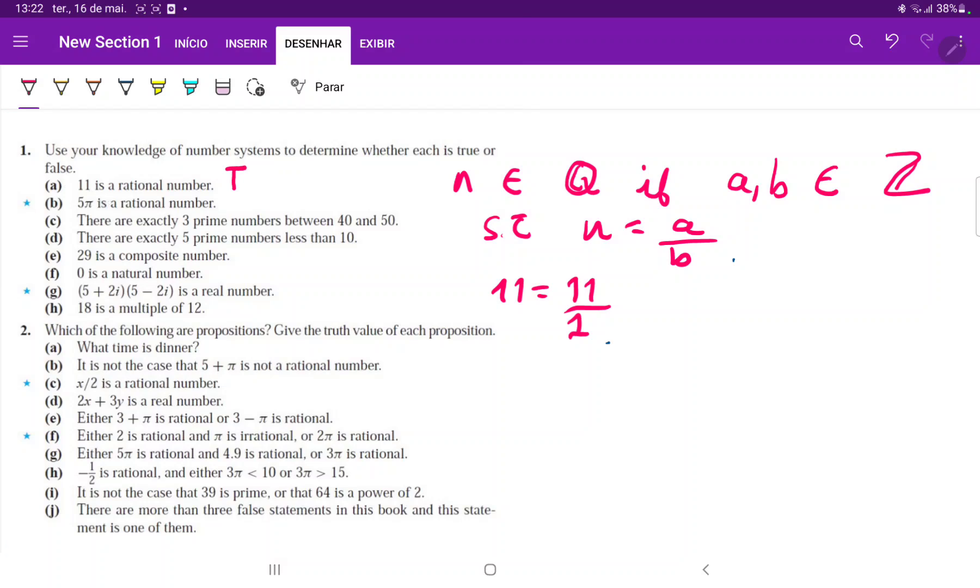What about B? 5π is a rational number. Well, π, we cannot express π as the quotient of two integers. There are some divisions that are good approximations, which I believe the Babylonians knew, but no, we can't express π as an exact ratio. So if we can't express π, we also can't express 5π, so this is false.